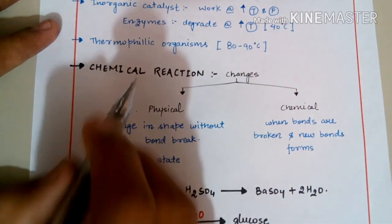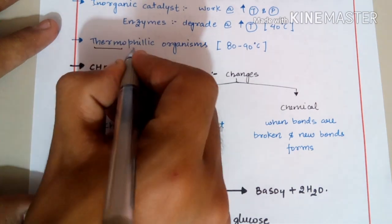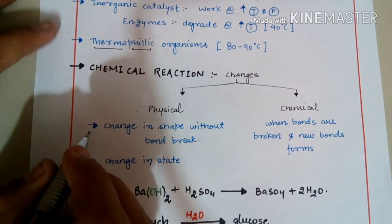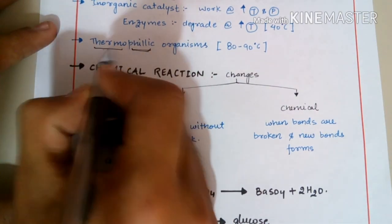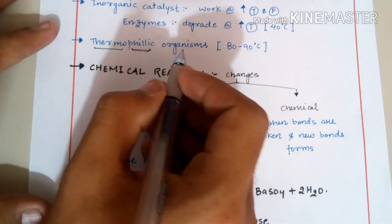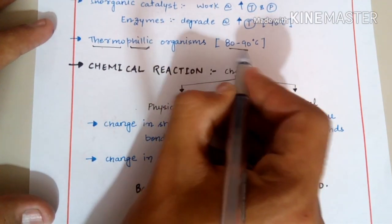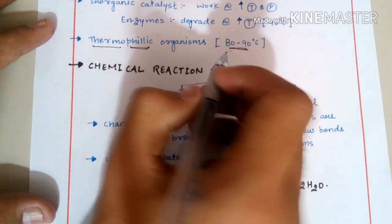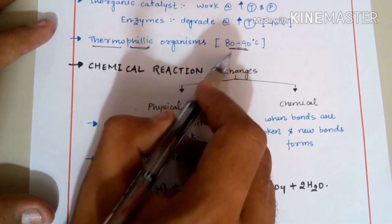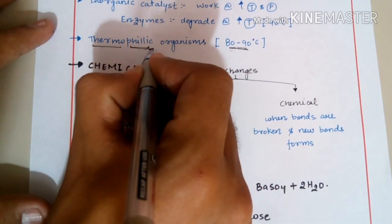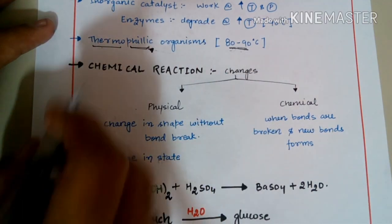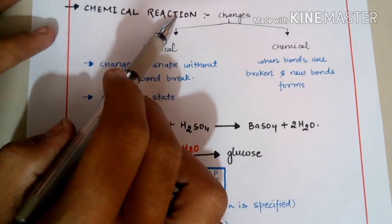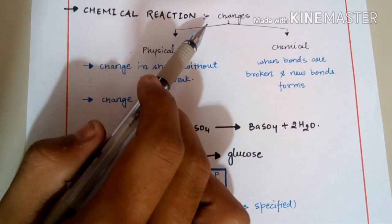Most biological catalysts degrade at higher temperatures, but there are some thermophilic organisms — 'thermo' meaning heat and 'philic' meaning love, like hydrophilic means water-loving. Thermophilic (heat-loving) organisms work at 80–90°C, so their enzymes are not degraded even at those temperatures because they are already adapted to function at high temperatures.